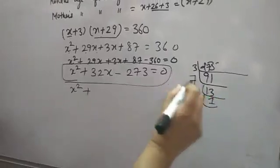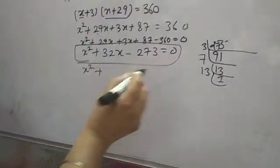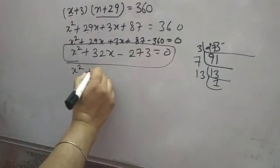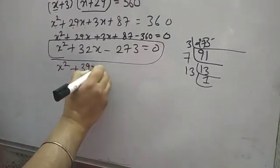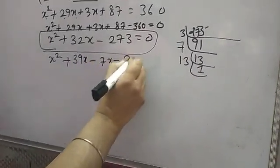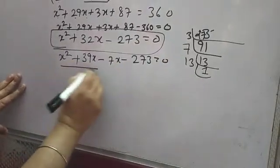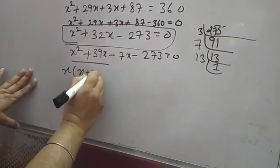Now make their factors such that we get 32. So 39 minus 7 is 32. So here we'll take 39X minus 7X minus 273 equal to 0.